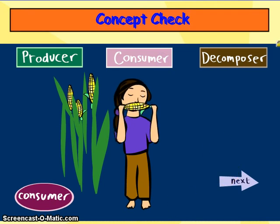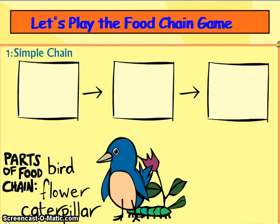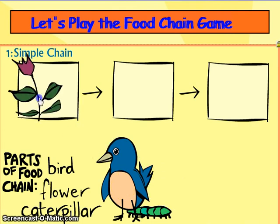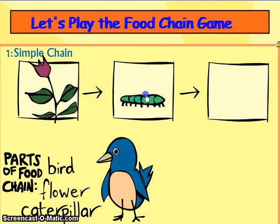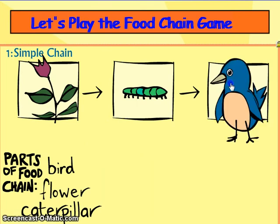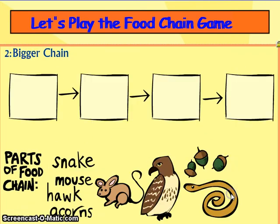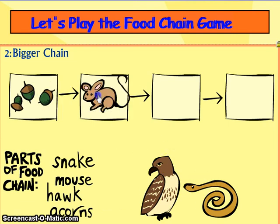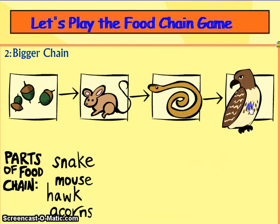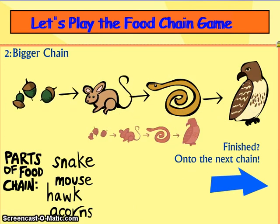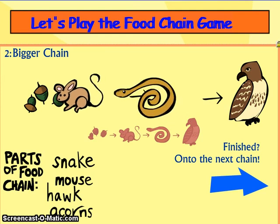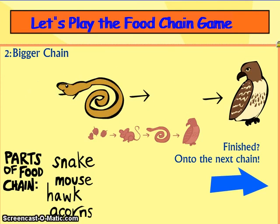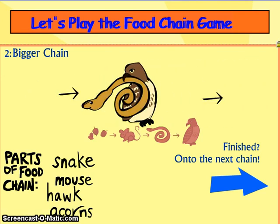Now let's look at food chains — put these in order. You would start with a producer, then a primary consumer, then a secondary consumer, and finally a tertiary consumer. Now that we've looked at the things within a food chain, let's look at where these food chains are living — and that would be ecosystems.